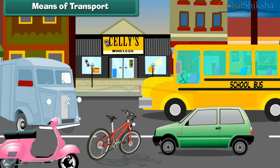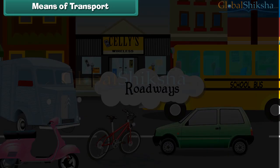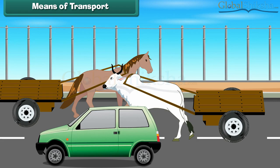Bicycles, scooters, cars, trucks and buses run on roadways. What is meant by the term roadways? A roadway is a thoroughfare route or the way between two places which typically has been improved to allow travel by some conveyance, including a horse, a cart or a motorized vehicle.